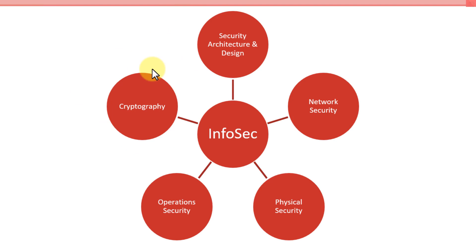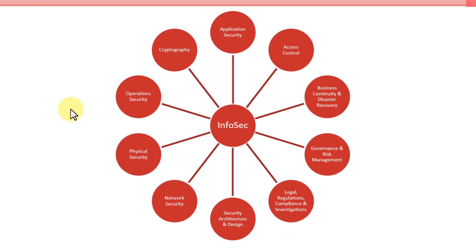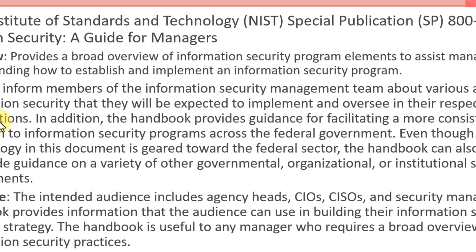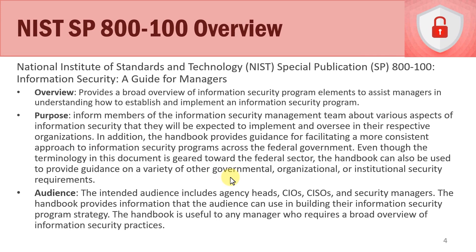That's a huge part of information security. As you can see, there are a lot of different aspects or elements of information security. These are a lot of different elements, and the NIST special publication we'll look at next has broken them up into even more. From a very broad, high-level perspective, this gives you a good overview of the different areas within information security. If you're new to the field and considering going into information security, you can think about all these different areas. So let's take a look at NIST special publication 800-100.